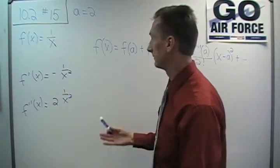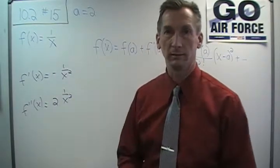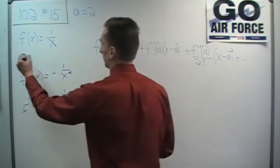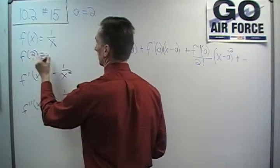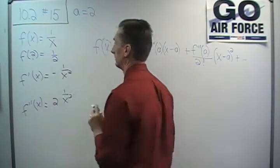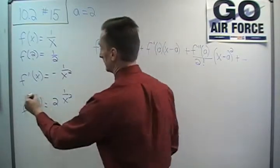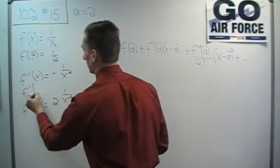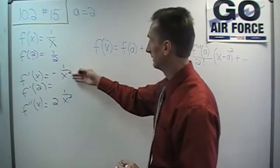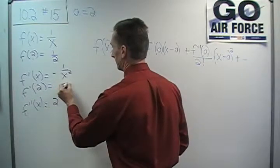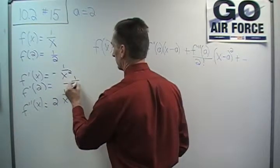So now I need to find out what the function evaluated at 2 is. So we'll need f of 2 and that of course is 1 half. That's easy to solve. And I'm going to need f prime of 2 as well. Put in 2 for x here. Obviously I'm going to get a negative 1 over 4.